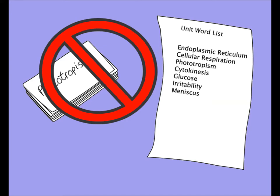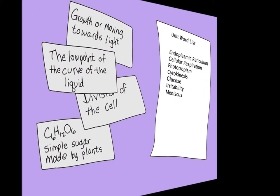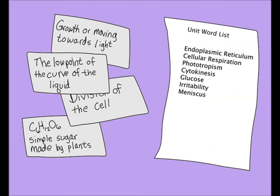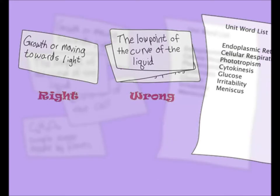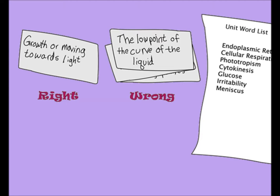Instead, flip the cards over and get out the vocab word list — if you don't have one, make one. We are now ready for step one. You're going to go through the cards reading the definition side and trying to match it to the word list. It's the matching kind of question that is almost as good as multiple choice on the quiz, and this is a good way to get familiar with all the words.